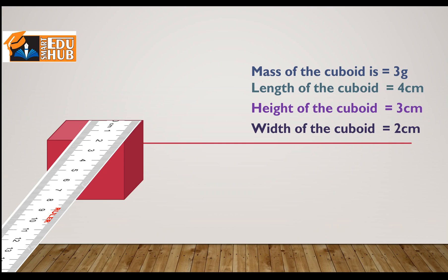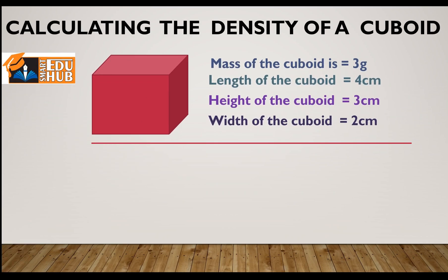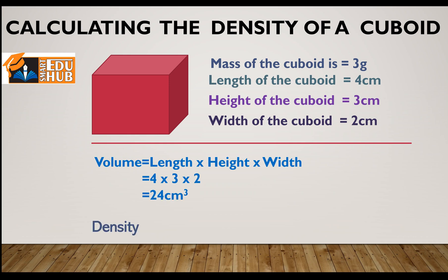Now I have the mass and the length, height, and width. With these I'm going to find the volume of the cuboid using the formula: volume equals length into height into width. Substituting the values — 4, 3, and 2 — I get the final answer of 24 cubic centimeters.